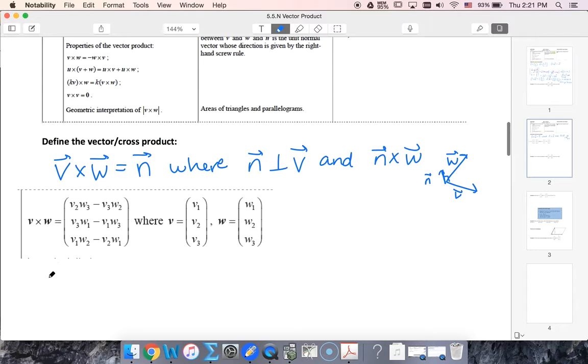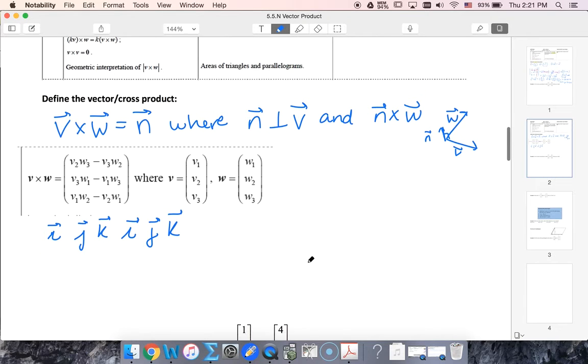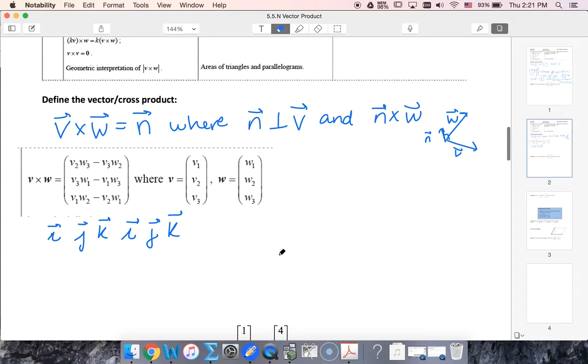I can write down I, J, K, I, J, K. Underneath it, I'm going to write out the values of my vectors: V1, V2, V3, V1, V2. I don't need to keep going anymore, and I'll show you why in a second. Then W1, W2, W3, W1, W2.